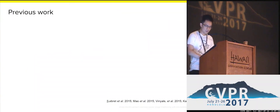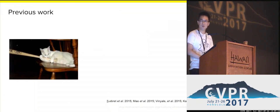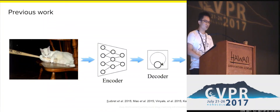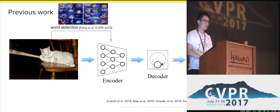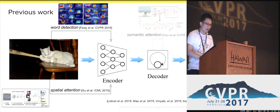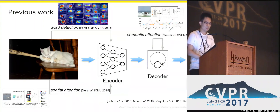Recently, with deep learning techniques, the second group of methods are inspired by machine translation. They use an encoder to encode visual information and then a decoder to generate a sentence word by word. On top of this encoder-decoder framework, many advanced techniques have been proposed, such as word detection, spatial attention, and semantic attention.